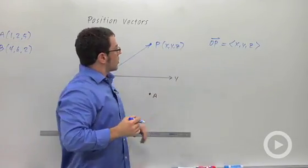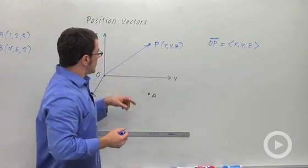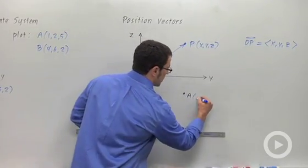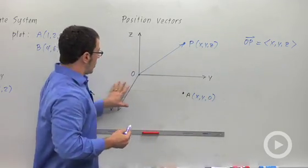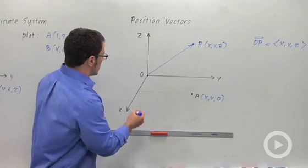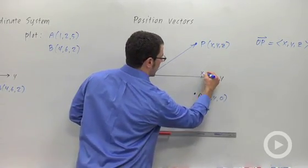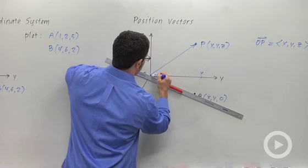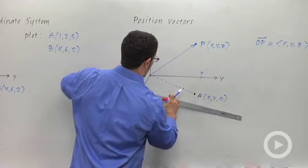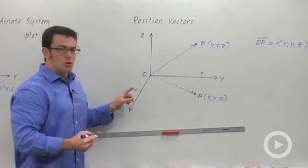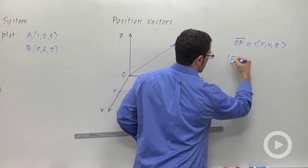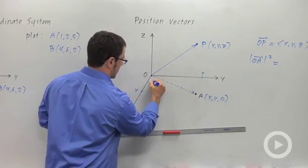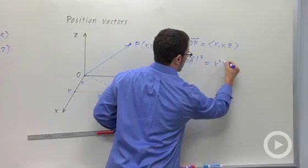And I want to find the length of this vector OP. And I can do it using what I know about two-dimensional vectors. Let's talk about the point that is right below it in the xy-plane, point A. Point A is going to have coordinates x, y, and 0. All the points in the xy-plane have a z-coordinate of 0. So this will be x, this will be y. And this tells me that this distance here can be found using the Pythagorean Theorem. The length of vector OA squared is going to be x squared plus y squared.